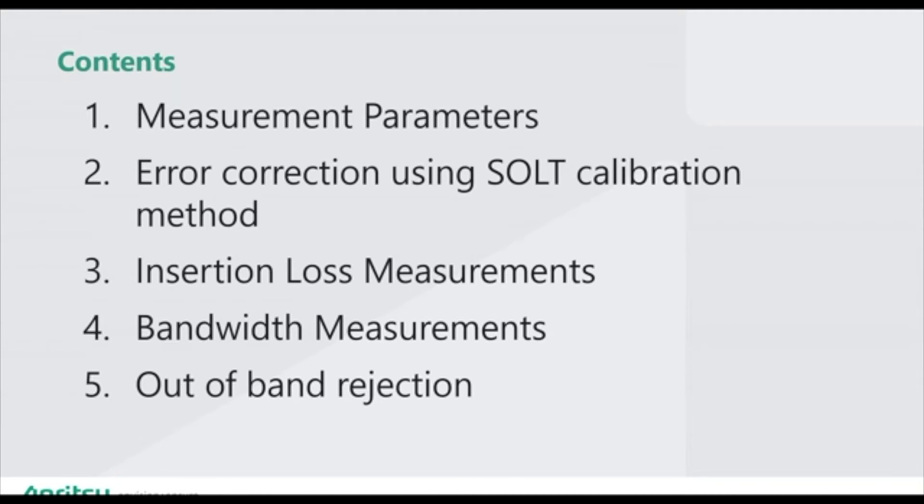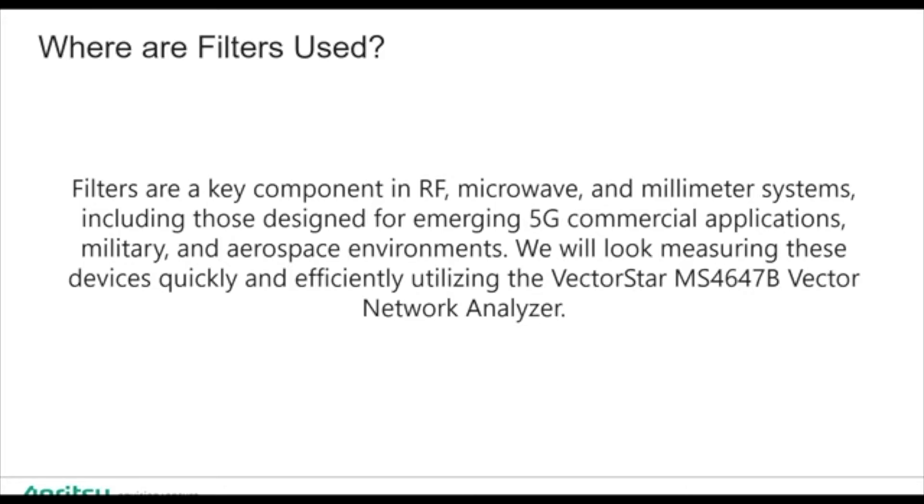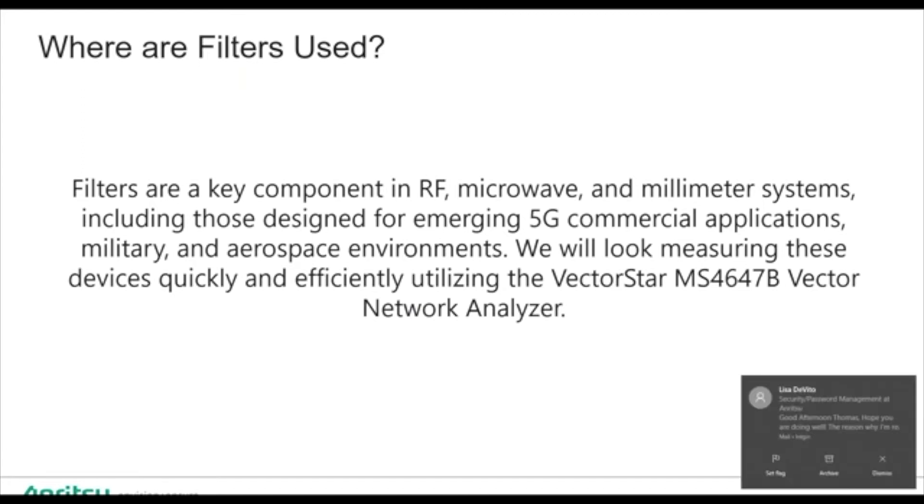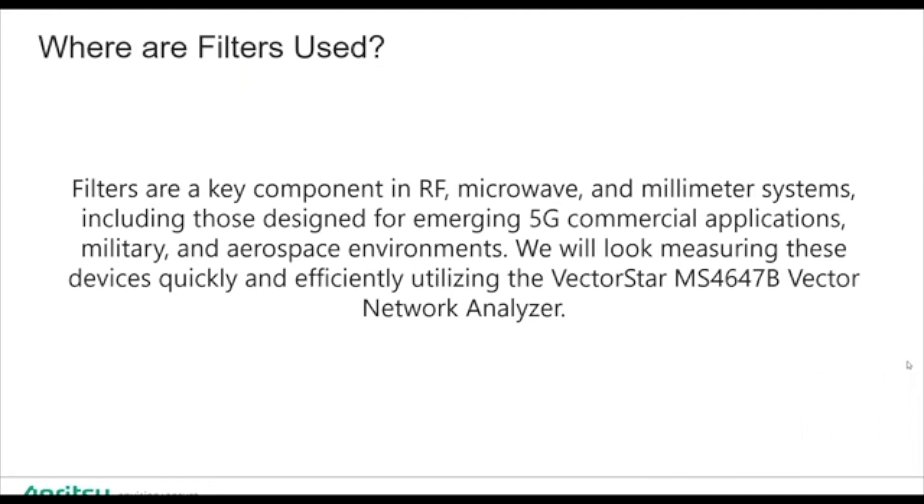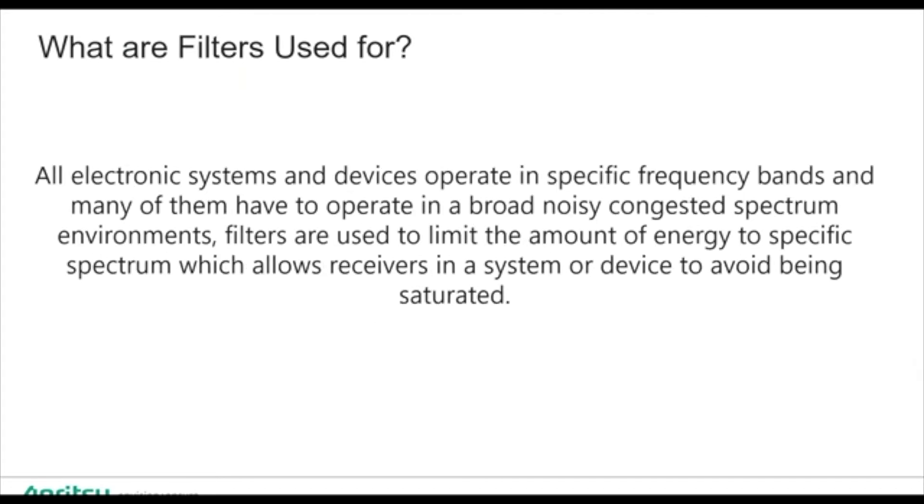Where are filters used? Every single system, regardless of what it is, has filters associated with it. They're in microwave systems, millimeter wave systems, 5G, pretty much anything that's electronic has some type of filter in it. Filters are used to allow energy to pass through frequency bands of our interest that our system is designed for and to block out noisy spectrum so that our receiver can function correctly. Filters are on transmitters and receivers.